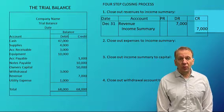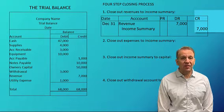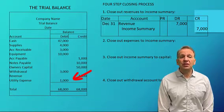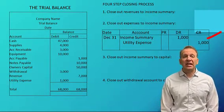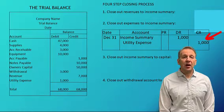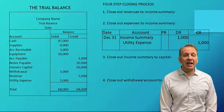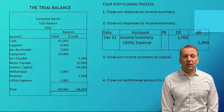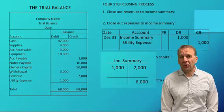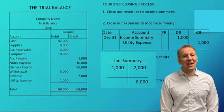In step number two, we need to close off the expense accounts. The expense accounts have debit balances — look at our trial balance, they have debit balances. So we have to credit the expense to zero it out. The expense has a debit balance, so we're going to credit it $1,000 and our debit will be to the income summary. So now our income summary has a credit of $7,000 and a debit of $1,000, giving the income summary an overall balance of $6,000. And that's what we do in step three.